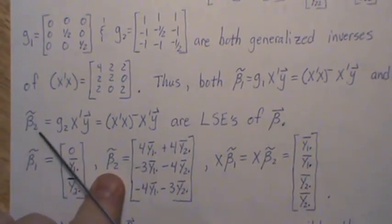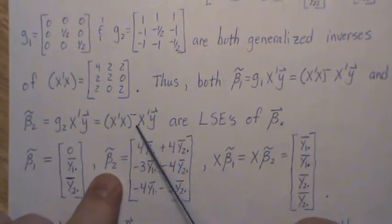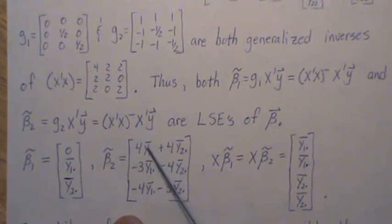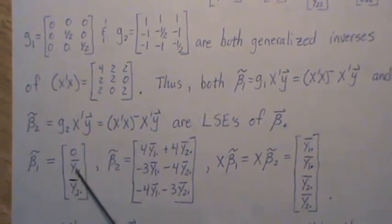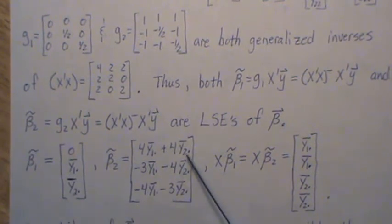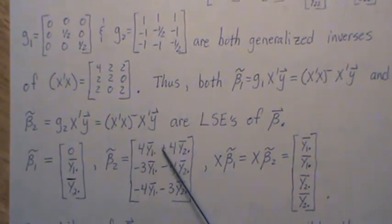Now, we can also solve beta 2 tilde, and we get this, where it's multiples of the group means. Well, the numbers that we get in each component here are absolutely different than the values we get in each component for beta 2 hat.